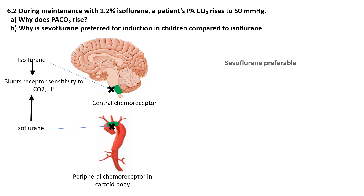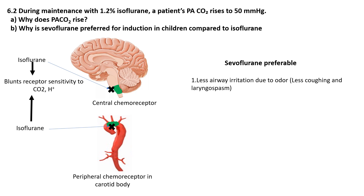Why is sevoflurane preferred for induction in children compared to isoflurane? Sevoflurane is preferred for induction as it causes less airway irritation than isoflurane or desflurane due to its mild odor, slower airway absorption, and minimal reflex activation. Its low pungency avoids trigeminal nerve stimulation, preventing coughing or laryngospasm. Sevoflurane also minimally stimulates airway nociceptors, reducing bronchoconstriction risk. This makes it ideal for inhalation induction, especially in children and asthmatics.